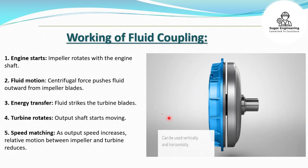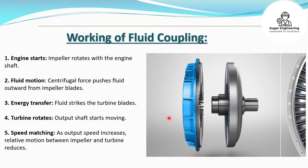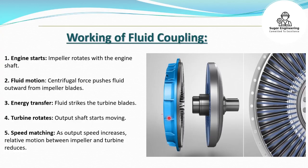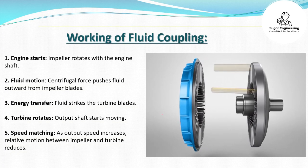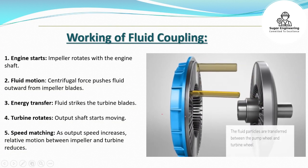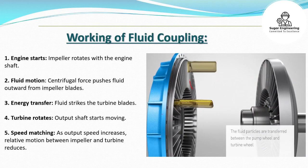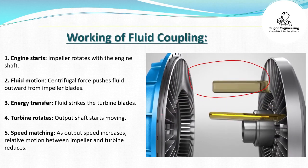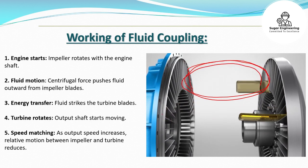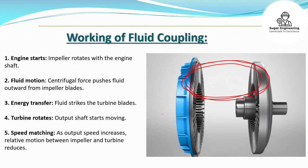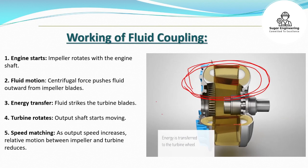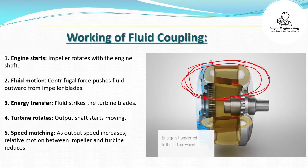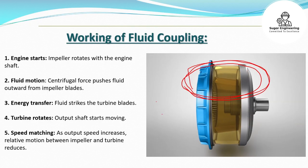The fluid coupling can be used vertically as well as horizontally. When installed vertically, as the pump wheel rotates, a centrifugal force is generated that pushes the fluid outwards from the impeller, and the fluid goes in a loop. The torque is transmitted from the pump wheel to the turbine wheel — this is very similar to the horizontal position. The fluid moves outwards and the design of the blades helps to achieve torque transmission by using the fluid.